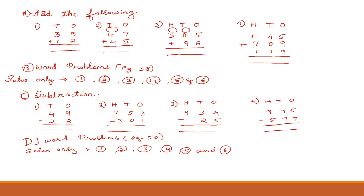The first section here is A — add the following. This is a type of question paper pattern where you need to practice solving the sums according to this pattern. In add the following you can see number 1, 2, 3, 4.